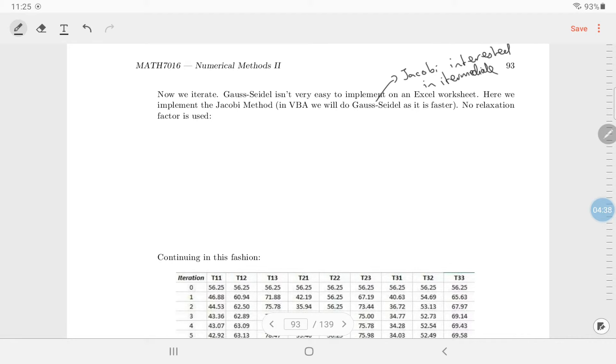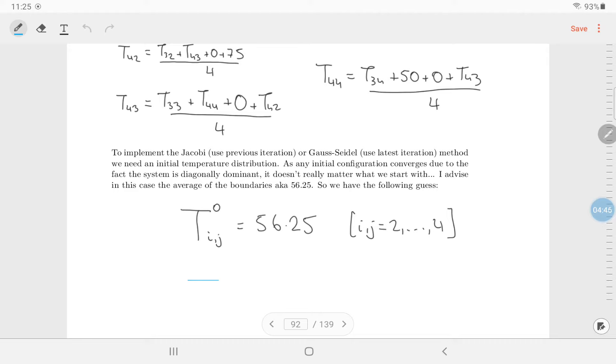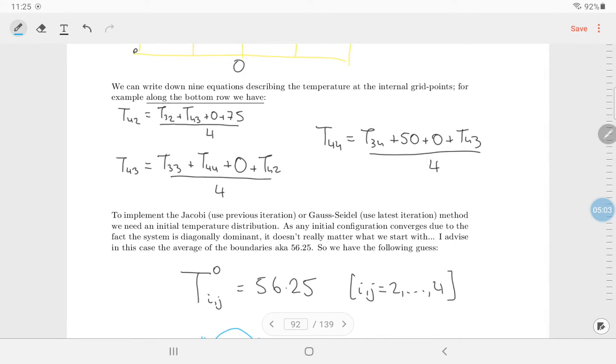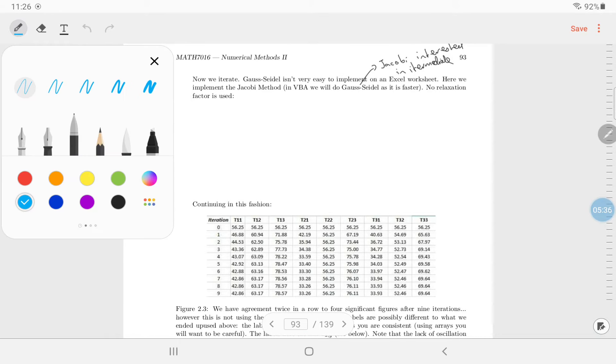So we're going to have to talk here about the Jacobi method just to describe it. So the idea is you have some approximation to your temperatures, which I can write as TK. And what you do is you feed it into the equations and you get out a better approximation. So you say, take 56.25 and you've got nine equations here. You feed in 56.25. Now, you'll see how we work with Gauss-Seidel. We don't put 56.25 into all of them. Once we've calculated T42, we will put in the very latest value of T42.